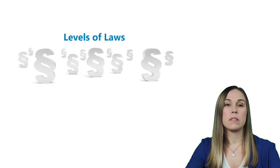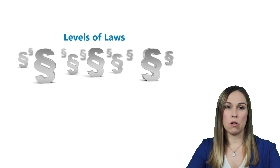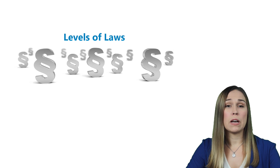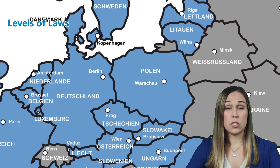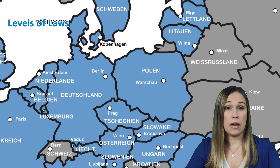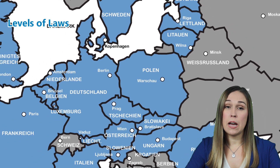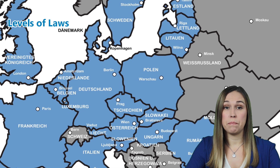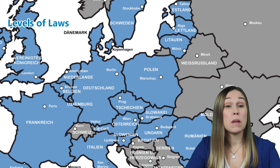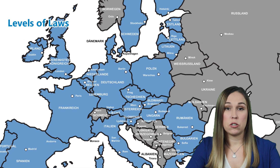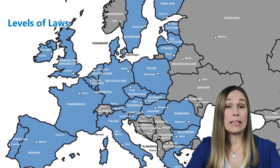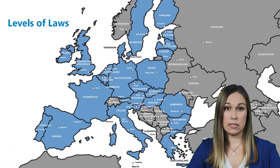Now I'd like to describe the levels of laws. When considering these rules, it is important to note that laws are implemented on different levels. The first is at a regional level, such as a town or a state. The second is at a national level, such as a country — the countries that are member states of the EU. The third is at an international level, like that of the European Union as a whole entity.